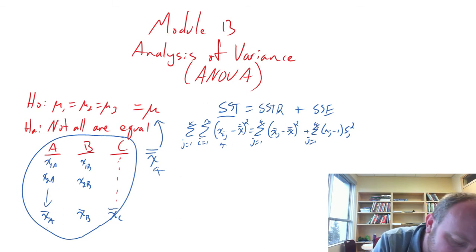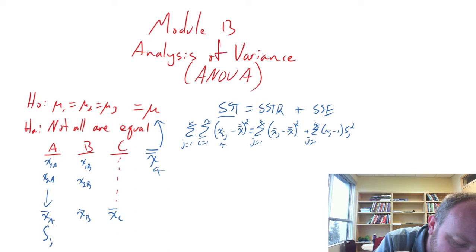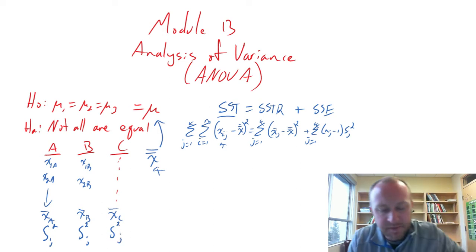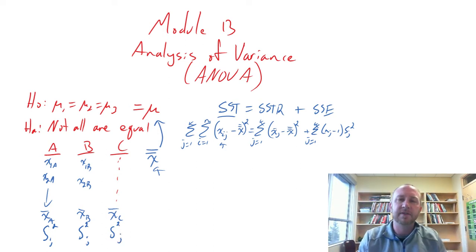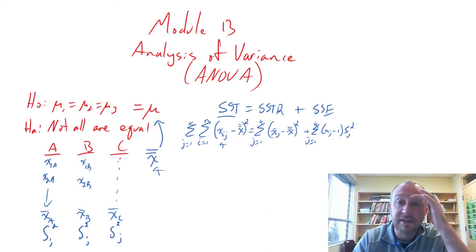For each of these samples we have a separate sample variance, and those three different sources of variation together make up the total.